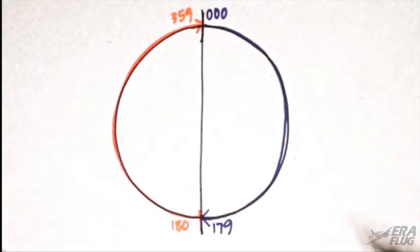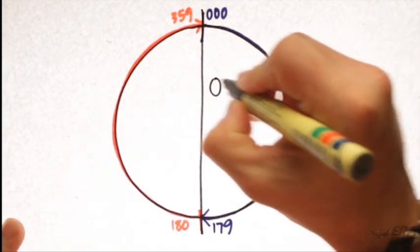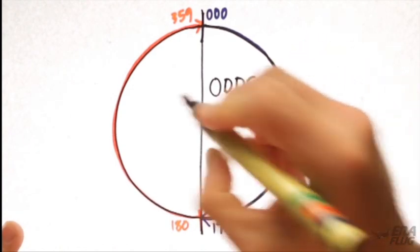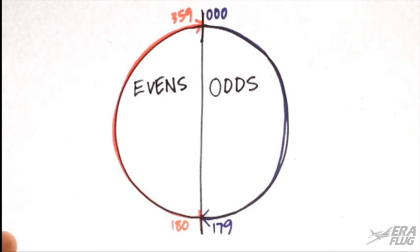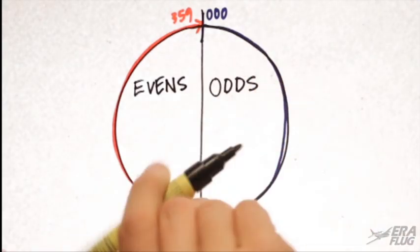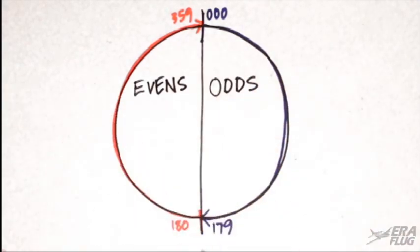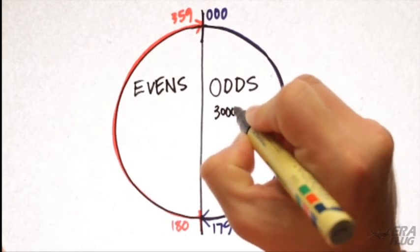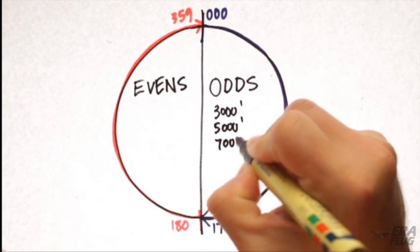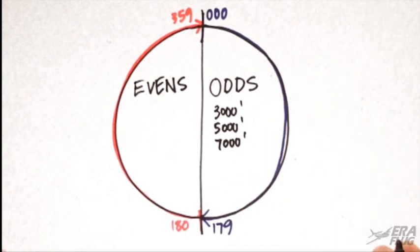The first sector we'll call odds, and the second sector evens. This means that all aircraft traveling in a roughly easterly direction will fall into the odd sector, and they will have altitudes beginning with an odd number. For example, 3,000 feet, 5,000 feet, 7,000 feet, and so on.